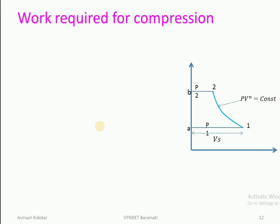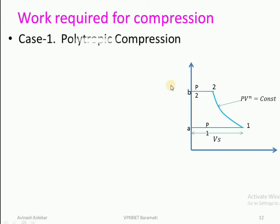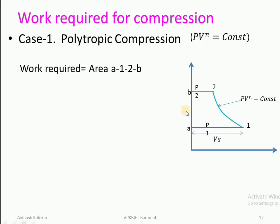We will follow that method for analyzing the compression work. In this diagram, we first consider that A12B is a cycle occurring with the polytropic compression process, and we will calculate how much work is required. The polytropic compression follows PV raised to n equals constant. The work required for cycle A12B is nothing but the area enclosed by this cycle on the PV plot. So work required equals area A12B.